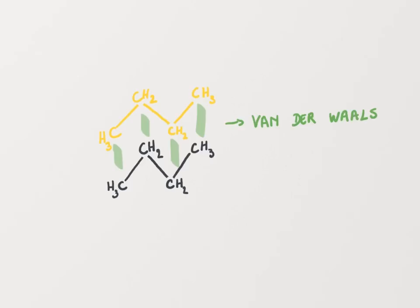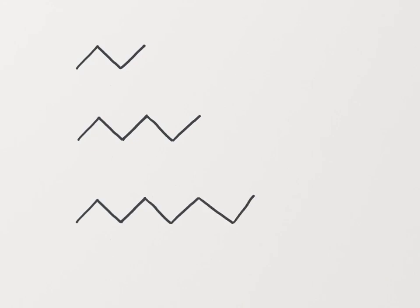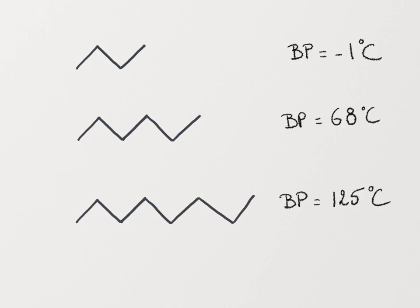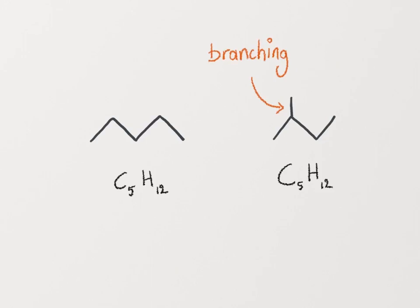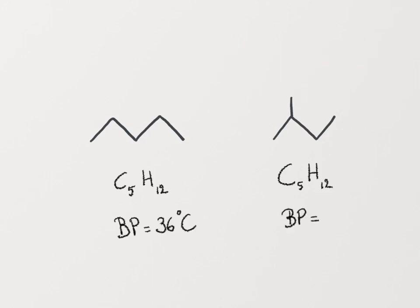But what if the type of interactions that can be formed are the same for multiple molecules? For van der Waals interactions, the strength increases with the surface area. In other words, longer chains with a higher number of carbons will have a higher boiling point. Similarly, when comparing molecules with the same number of carbons, branching will reduce the interaction surface area and thus result in a lower boiling point.